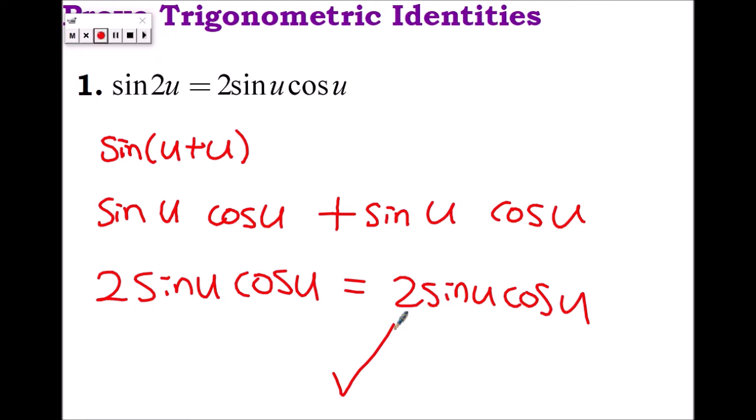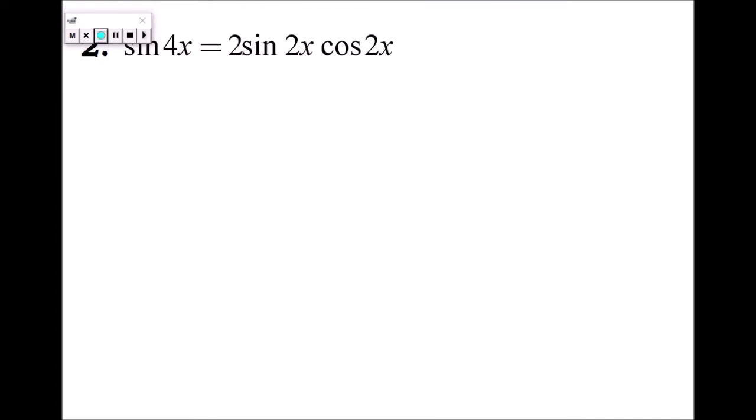Okay? This is actually an identity. This is called double identity. Instead of u, you have double u. It's two sine of u, cosine of u. Okay? Number two. What would you do?